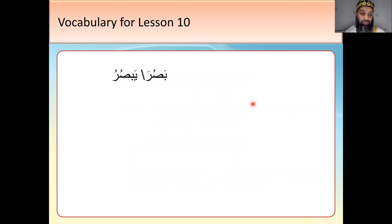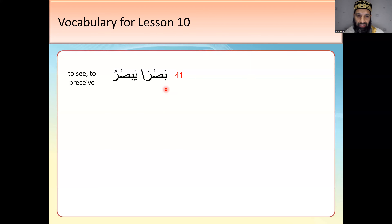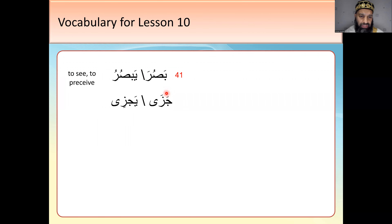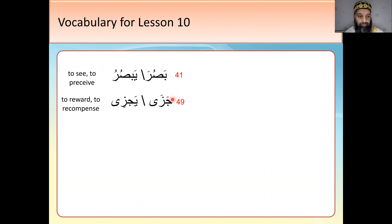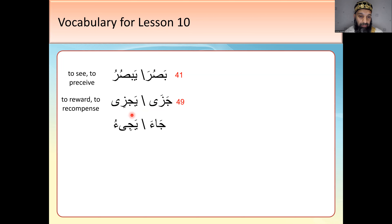Vocabulary: basura — yabasuru — to see, to perceive. It's different from yara. Jaza — yajzi — reward; jaza kallah khair. You can tell this is a weak verb because it has a ya inside it. Jaza yajii — another weak verb. Hakama yahkumu — to judge; hakim means judge. Khalfa yakhlufu — to be behind; the khalifa came after the prophet, and khalf means behind.